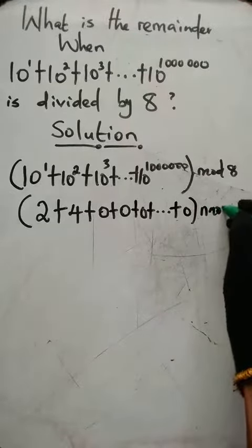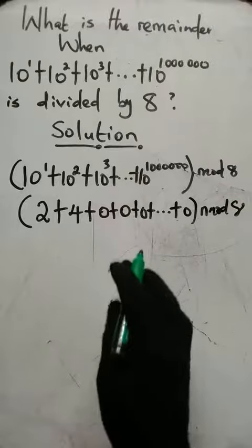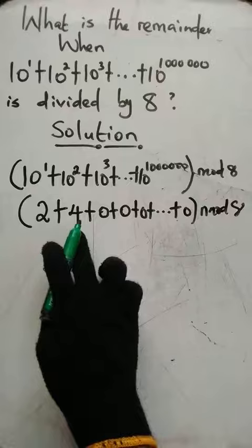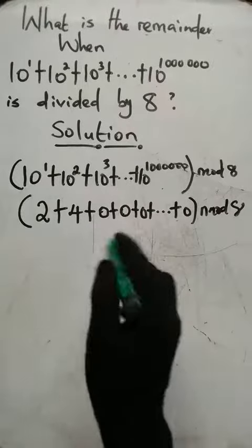Then we're working in mod 8. Now we have here to simplify this. Remember this is 2 plus 4 is 6, 6 plus 0, 0, 0 till it stays 6. So we have 6 mod 8.